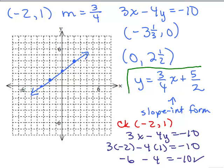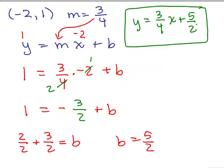We got the slope-intercept form because we found the y-intercept by taking the equation in standard form and putting in 0 for x. We also got it this way. Lots and lots of connections. So that's a comprehensive example. If you know a point on the line and the slope, we were able to put it in standard form, find the x-intercept and y-intercept, put it in slope-intercept form, graph it, check it, and do it a completely different way. Keep practicing.